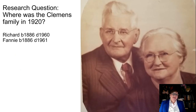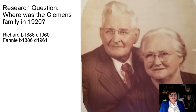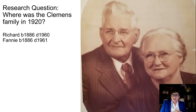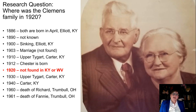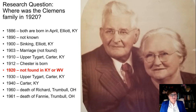Now let's move to a different case that really had me doing some digging. This is also my grandfather, but my father's father and his mother — Richard and Fanny Collier Clemens. They were born in 1886 and died about a year apart in 1960 and 1961. My quest was to find them and their family on every single census they would have appeared on. I started with my dad, who was in 1940 working as a coal miner in West Virginia. But for Richard and Fanny, they were both born the same year in April in Elliott County, Kentucky. In 1890, I don't know where they are, but since they were in Elliott County in 1900, I assume they may have been there in 1890 as well.